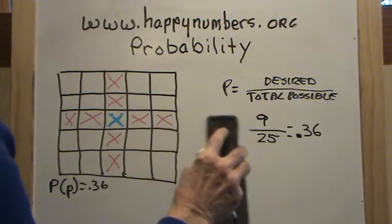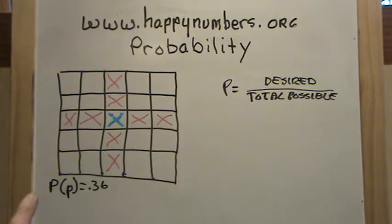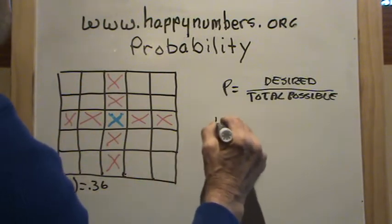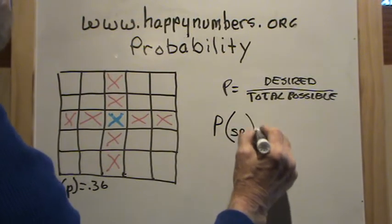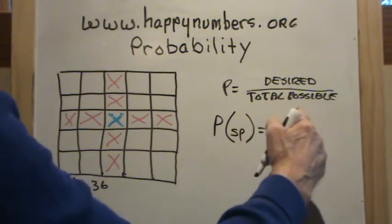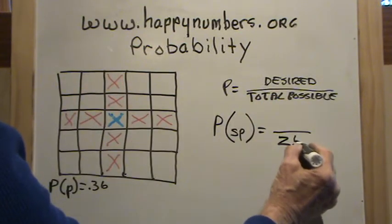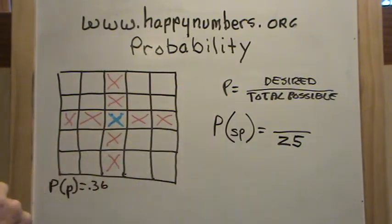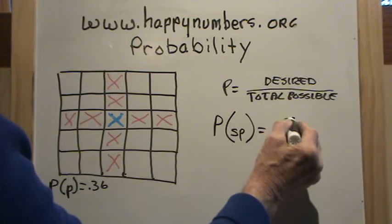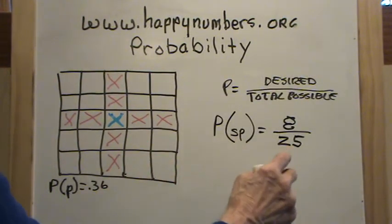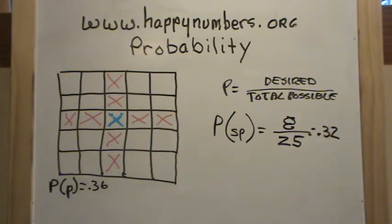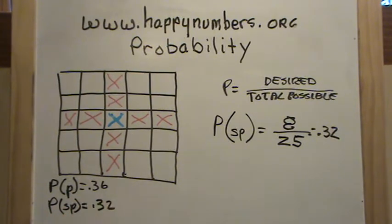Now, what's the probability of winning a small prize? Remember, if we land on the red, we get a small prize. The probability of a small prize: the total possible outcomes remains 25. But now the desired outcome is just the red squares, and there are eight red squares. So the probability of winning a small prize is 25 divided into eight. I worked that out on my calculator, and that is 32 hundredths. So the probability of getting a small prize is equal to 0.32.